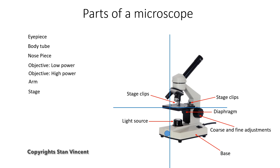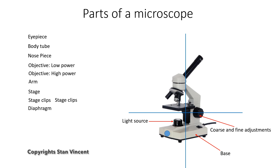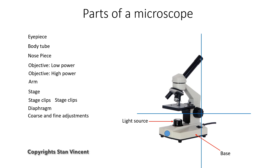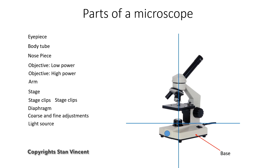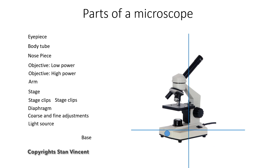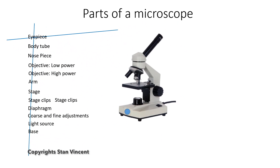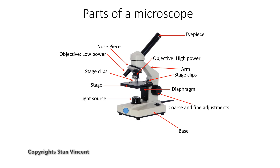The stage. Stage clips. Diaphragm. The coarse and fine adjustments. The light source. And the base of the microscope. These are the parts of the microscope which you need to be able to label when a diagram is provided to you.